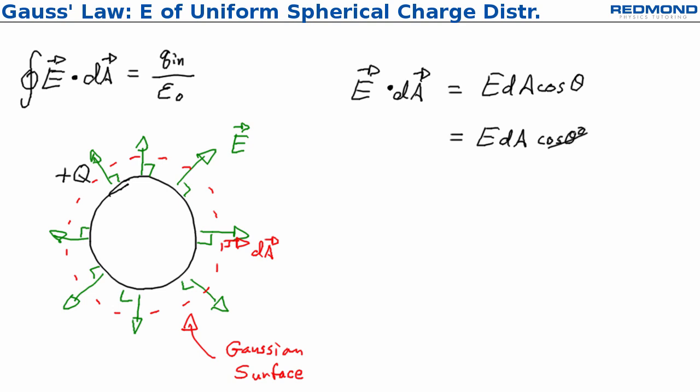So we get E times dA cos of zero degrees, and cos of zero degrees is one. So this actually simplifies down to E times dA, and then the integral simplifies to E dA, and then we still have Q enclosed over epsilon naught.